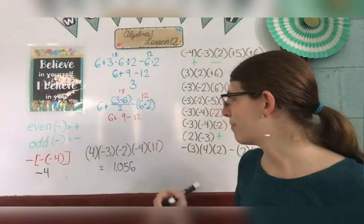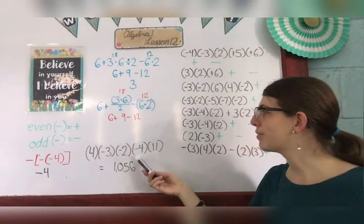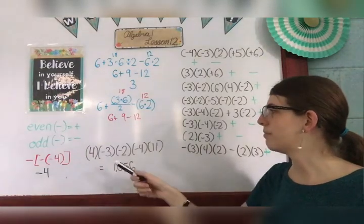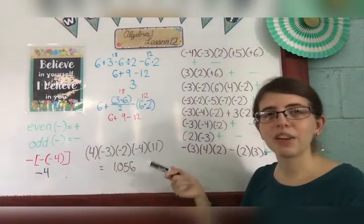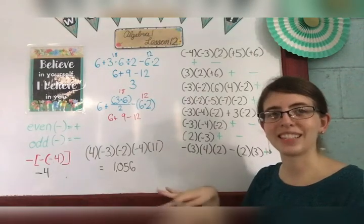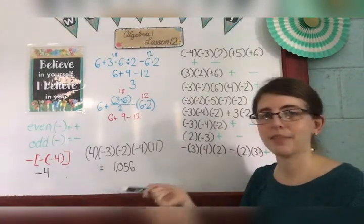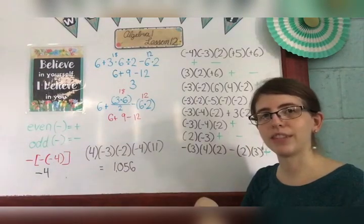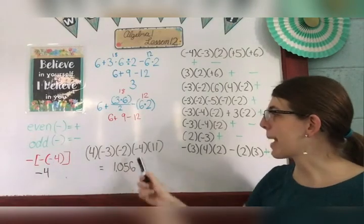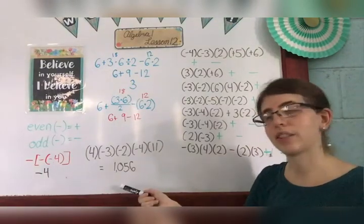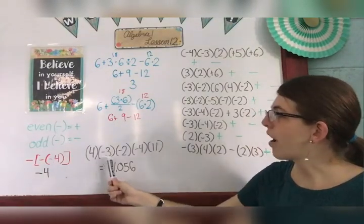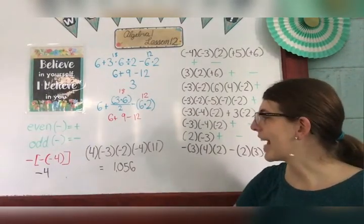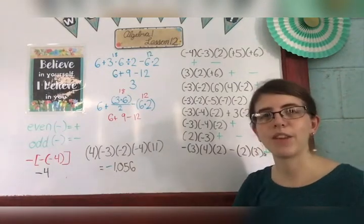Let's look at this one: 4 times negative 3 times negative 2 times negative 4 times 11. I have two positive numbers and three negative numbers. The number of positive numbers doesn't matter because it doesn't affect my answer, but the negative numbers do. I want to determine if the answer — 1056 — should be positive or negative. I count my negatives: one, two, three. That's an odd number, so my answer is negative 1056.